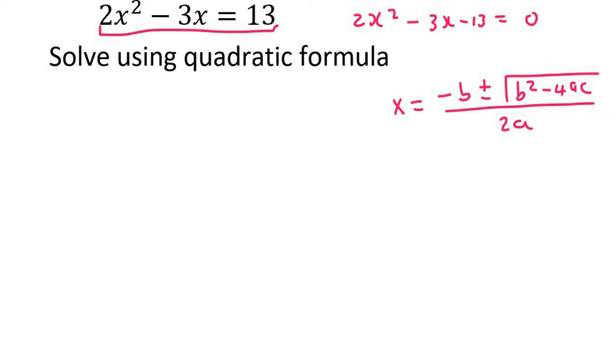Now I have my zero. When I've got the zero, then a is the number in front of x squared, b is the number in front of x, and c is the remaining number.